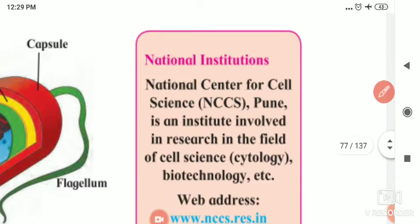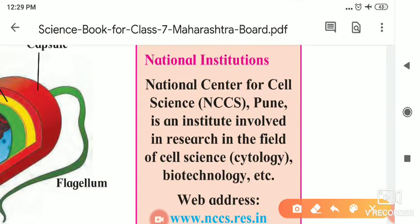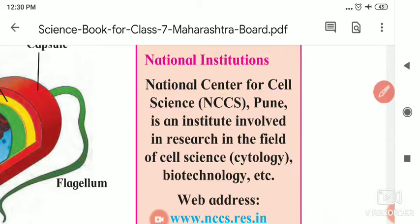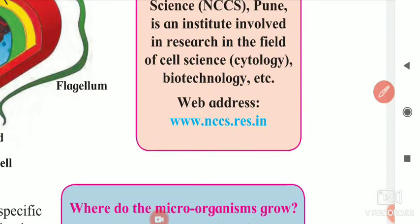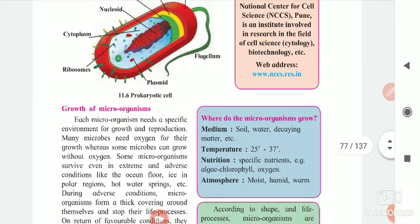Here is information about a national institution: the National Center for Cell Science, Pune, is an institute involved in research in the field of cell science, cytology, and biotechnology. The web address is www.nccs.res.in, where you will get information regarding this.